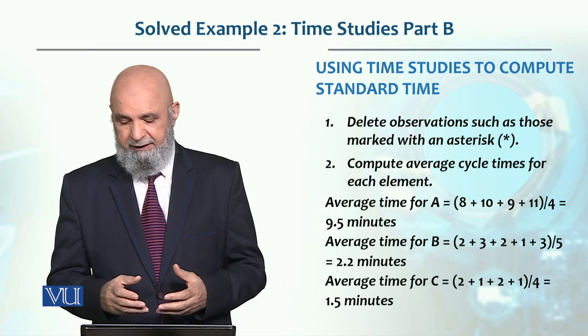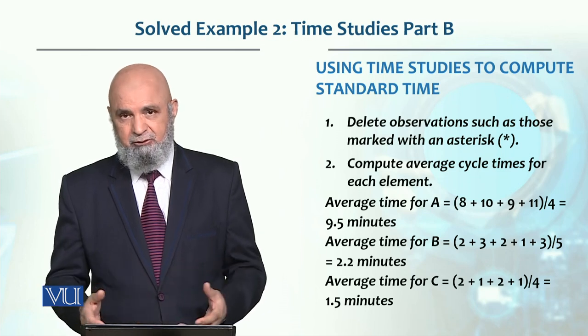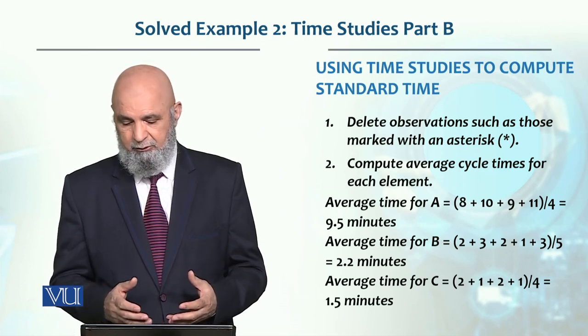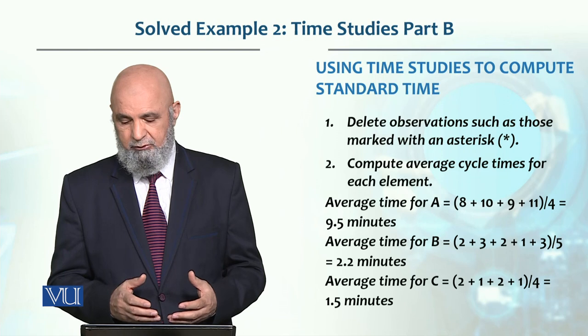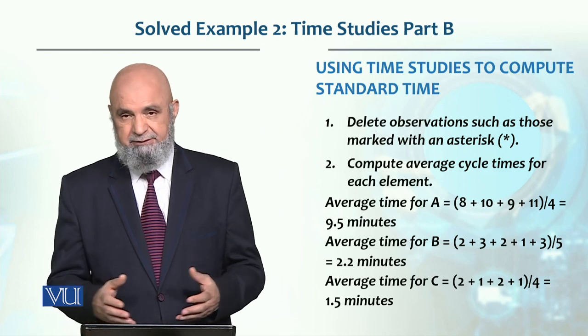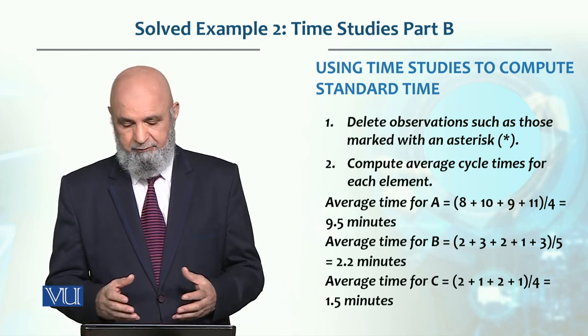For work element B, we have 5 observations: 3, 1, 2, 3, 2. We sum them up and divide, giving us 2.2 minutes.